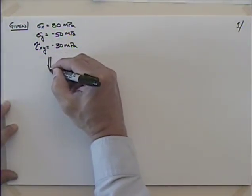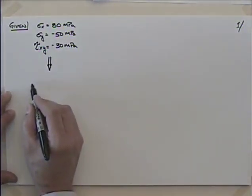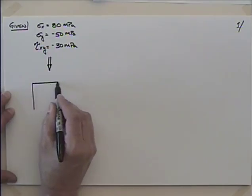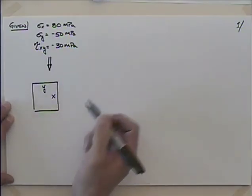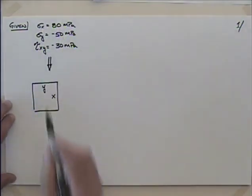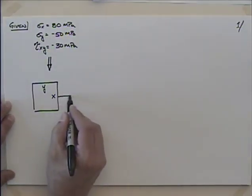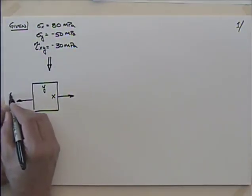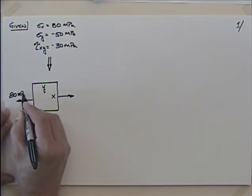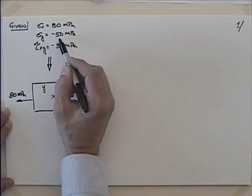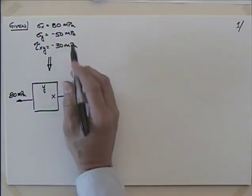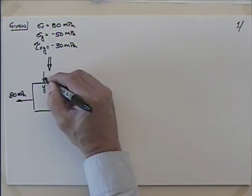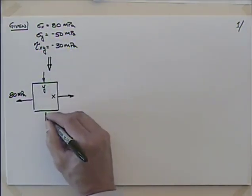We talked a few weeks ago about how to come up with the element — that's not really related to Mohr's circle. If I draw the element, this would be the x-face and this would be the y-face. We're told that sigma on the x-face is 80 megapascals. Taking positive as tension, I have 80 megapascals. On the y-face, I have minus 50 megapascals. I don't like negative numbers, so I'll draw it in compression and call it 50 megapascals.